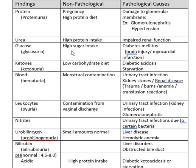It is possible to binge eat sugar so much that some of it comes out in your urine, but your body is extremely efficient at taking sugar out, so you rarely have a non-pathological reason. If you have type 1 or type 2 diabetes, you're going to have glucose coming out in your urine. Heart attack, impaired blood circulation, and brain injury are a couple of other things that can cause glucose to come out in your urine.